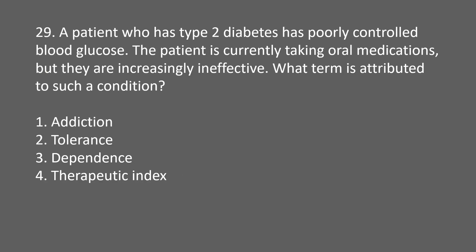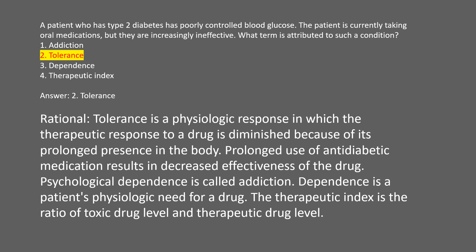A patient with type 2 diabetes has poorly controlled blood glucose and is taking oral medications that are increasingly ineffective. What term is attributed to such a condition? 1. Addiction. 2. Tolerance. 3. Dependence. 4. Therapeutic index. Answer: 2. Tolerance. Rational: tolerance is a physiologic response in which the therapeutic response to a drug is diminished because of its prolonged presence in the body. Psychological dependence is addiction; dependence is a physiologic need for a drug.